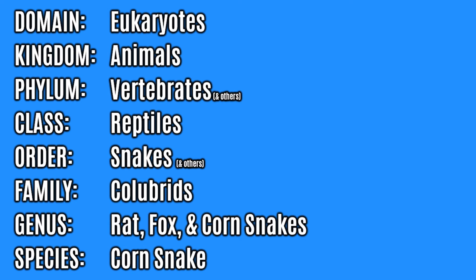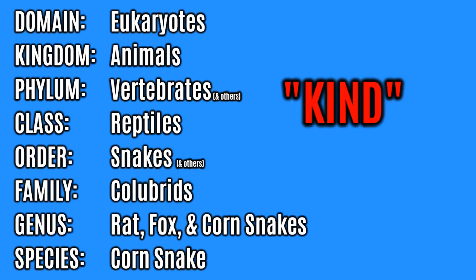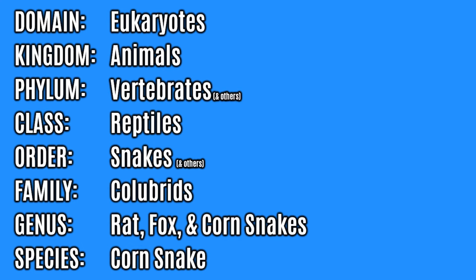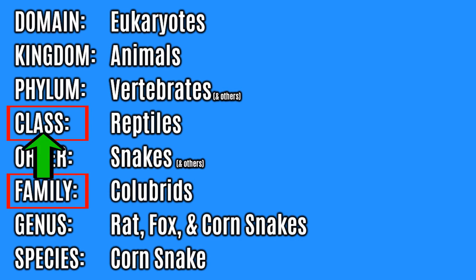So instead of saying that a colubrid is a kind of animal, and that a reptile is a kind of animal, we can say that the colubrids are a family of animals, and that the reptiles are a class of animals, and immediately know that the colubrids are also a family of reptiles.